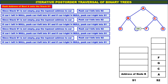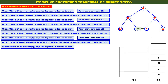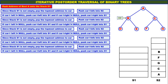Since stack S1 is not empty, pop the topmost address to CUR. Address of node B is popped and assigned to CUR. Push CUR info into S2, so B is pushed onto stack S2. CUR left is not equal to null — B's left child is D — therefore address of node D is pushed onto stack S1. CUR right is also not equal to null — B has a right child E — therefore address of node E is also pushed onto stack S1.